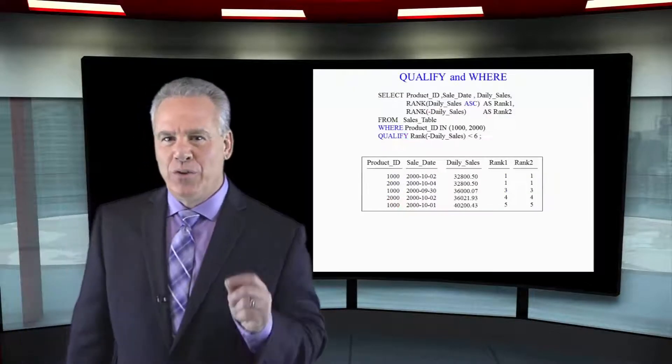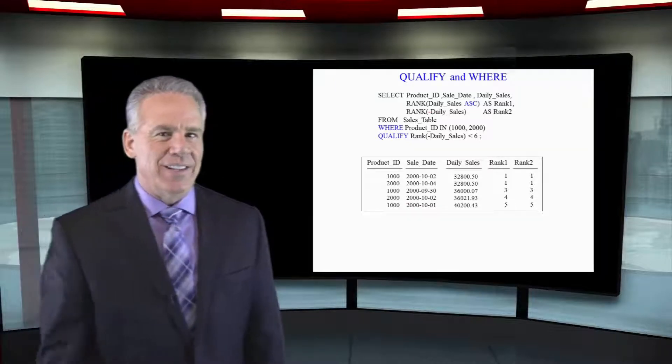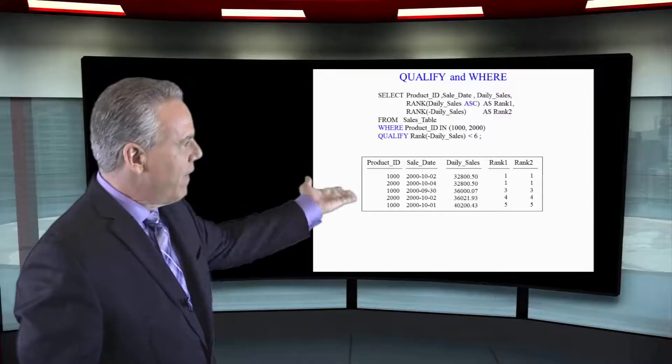Now I'm going to introduce the qualify statement with a where statement. We've got two ranks — they're equivalent. We're going to have a where clause where product ID is in 1000 or 2000. Before anything is calculated, the system is going to find only rows that have product IDs of 1000 or 2000, and once it has those, it's going to sort them by ranking and then use the qualify to only bring back the top five rows.